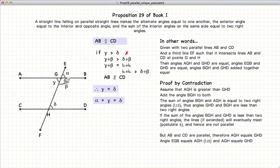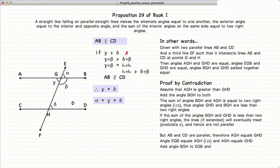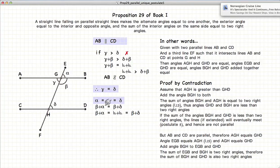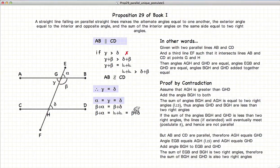And finally, since alpha plus beta equals 180 degrees and alpha equals delta, we can say delta plus beta equals 180 degrees. Since alpha and delta are equal, beta plus alpha equals beta plus delta, which is 180 degrees.